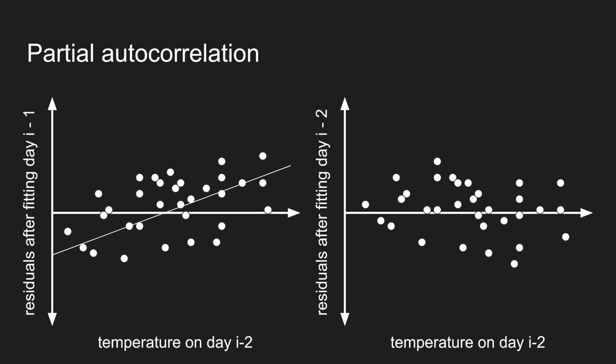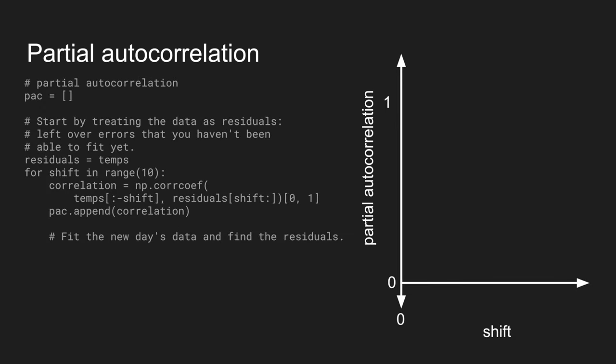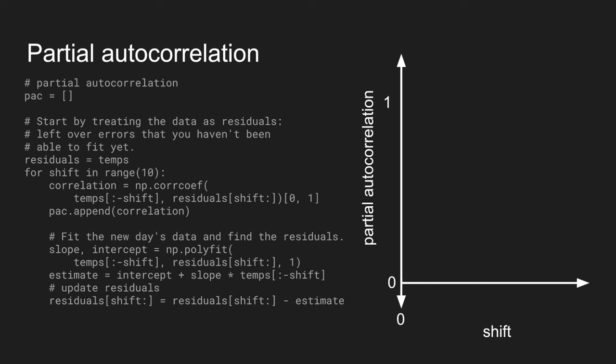And what this does is it lets us see, as we plot that, we go each day, and after we calculate the coefficient of correlation between that day and the day before, then we fit the line to it, we calculate the estimate along all the points on that line, and then we subtract that estimate from what we're still trying to fit, and we get updated residuals.